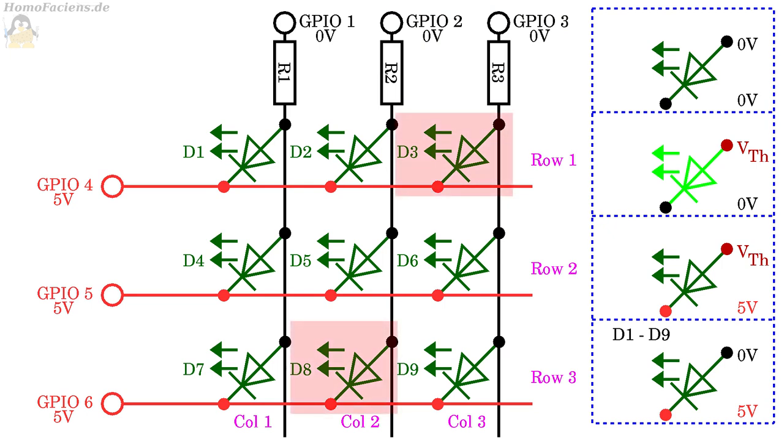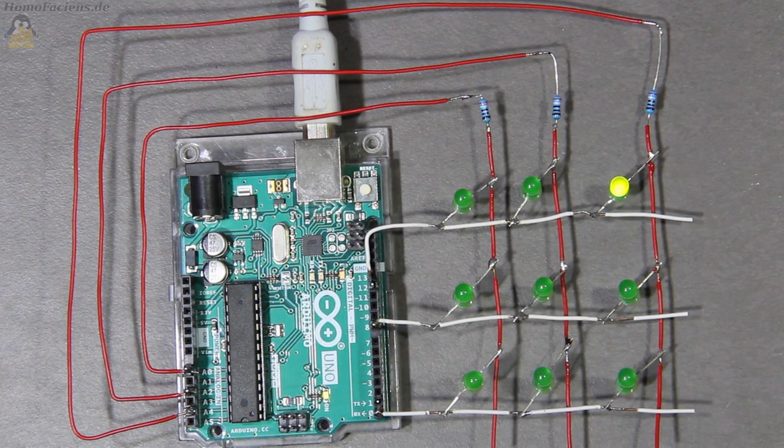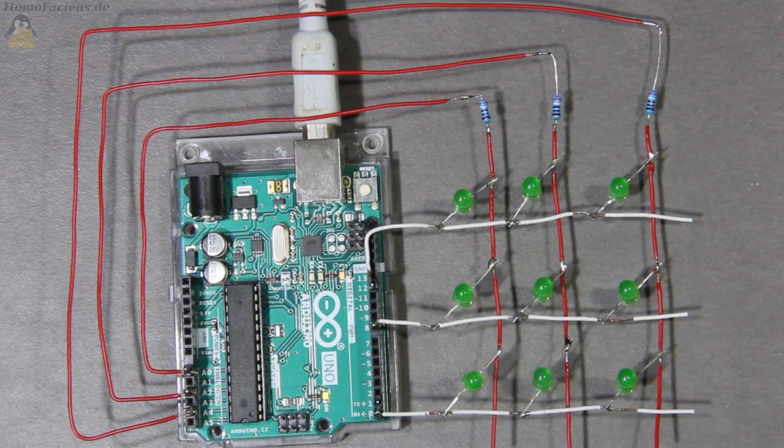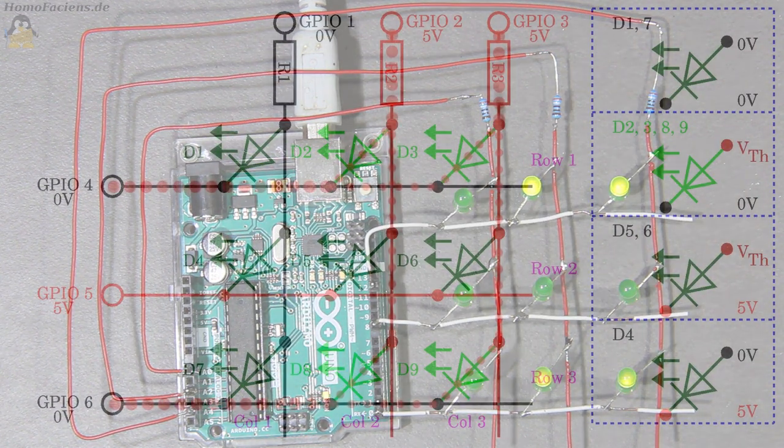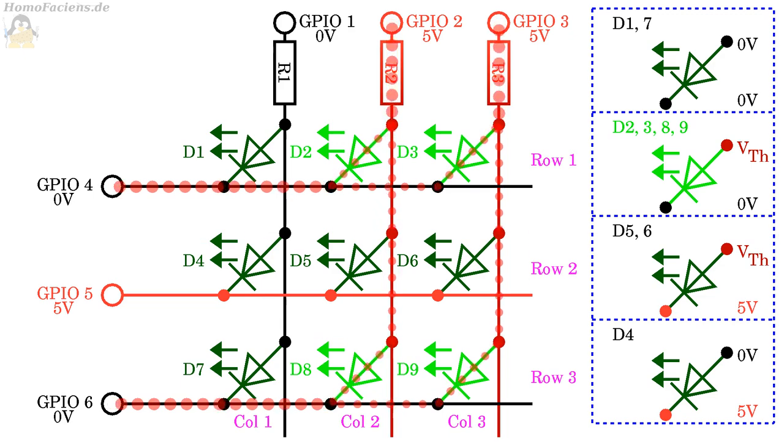However, it is not possible for example to just switch on the LEDs number 3 and 8. For LED number 3, column 3 must be set to high and row 1 to low. For LED number 8, column 2 must be set to high and row 3 to low. If both LEDs are switched on according to this principle, the LEDs 2 and 9 inevitably also start to light up. The animation shows the voltages on all LEDs and why 4 LEDs are turned on instead of the desired 2.